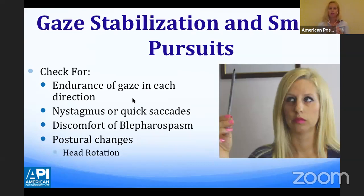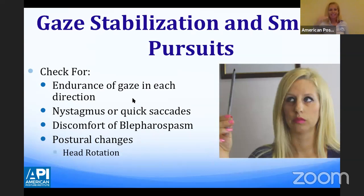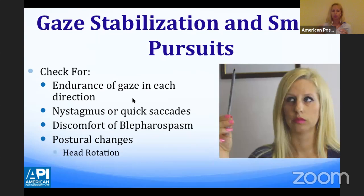You might see nystagmus or quick saccades, discomfort, or blepharospasm — excessive blinking or withdrawal. You might also see postural changes: if I'm looking up into the right and my eyes start to fatigue, I move my head up into the right. If you see any of these — lack of endurance, nystagmus, discomfort, blepharospasm, or postural changes with head rotation — this is a positive indication of lack of gaze stabilization in that field of gaze. Take note of which direction they cannot smooth pursue and which direction they cannot gaze stabilize.